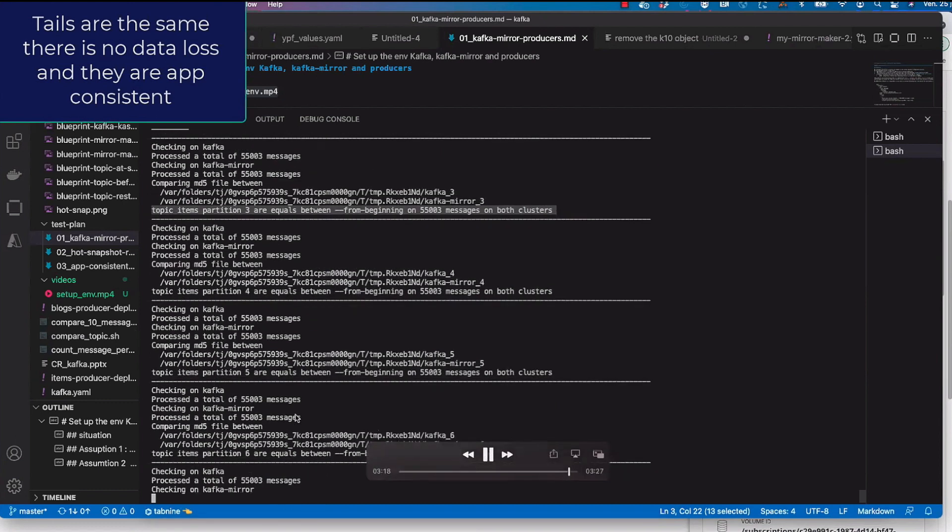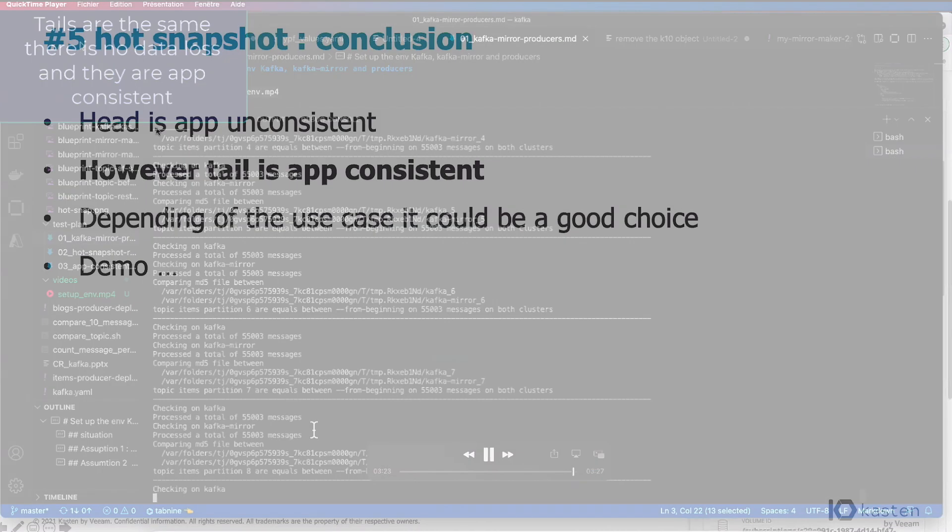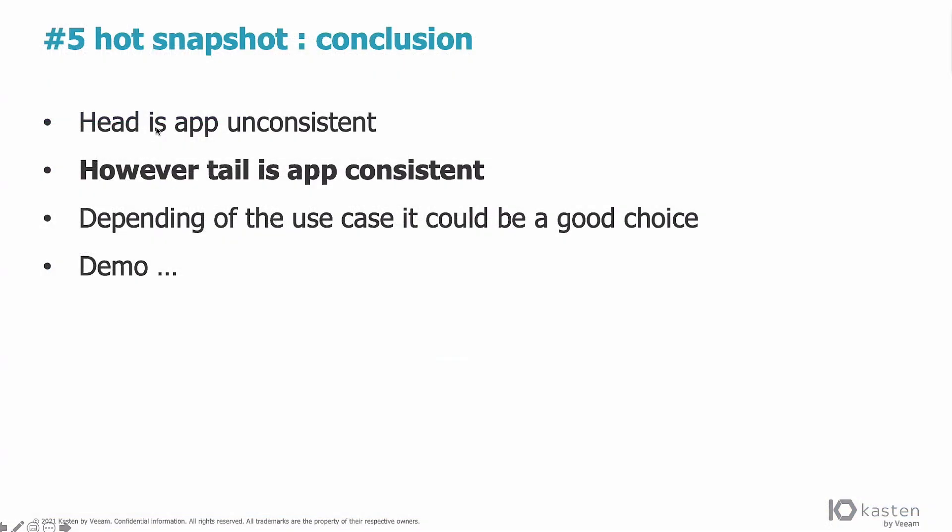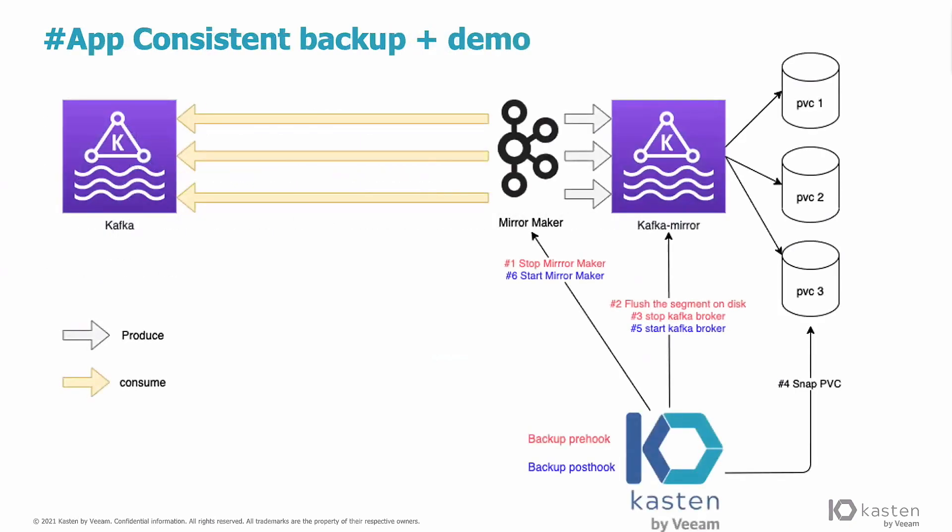So now let's see how can we improve that? How can we do something better in this situation? So what we see in the head is inconsistent, but the tail is consistent. So depending on the use case, it could be a good choice because it's cheap. But we can imagine something else. Instead of using Kafka mirror for the comparison, we could use it as a strategy to implement an application consistent backup.